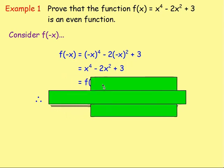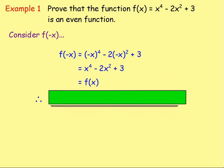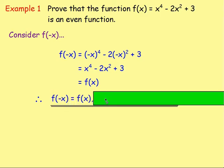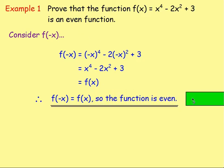And if you look at that, that is what we had right at the start — x to the power of 4, take away 2x squared plus 3 — which is equal to f of x. So f of negative x is equal to f of x, which means the function is an even function.